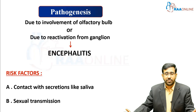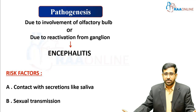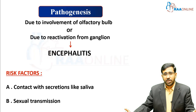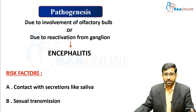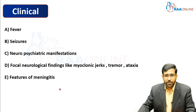The main risk factors are contact with secretions like saliva, sexual transmission, and contact with body fluids containing the virus. The virus undergoes local multiplication, then involves the olfactory bulb, or in many cases reactivates from the ganglion. Following reactivation, the virus enters the central nervous system, causing encephalitis — severe inflammation of the brain.